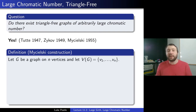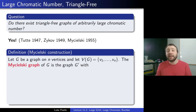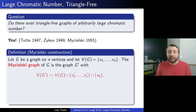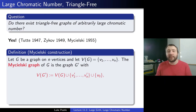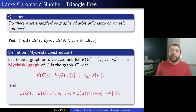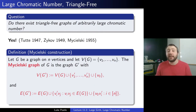I'll give you an explicit construction of how to build triangle-free graphs of large chromatic number. Generally, we'll take a graph G on n vertices and enumerate the vertices v1 up to vn. The Michelski graph G' based off of G is the following. The vertices will be the vertices of G labeled v1 up to vn, then v1 prime up to vn prime — those are new vertices — and one last new vertex called v0. The edges will be the original edges, plus the edges vi prime vj where vi vj is an original edge of G.